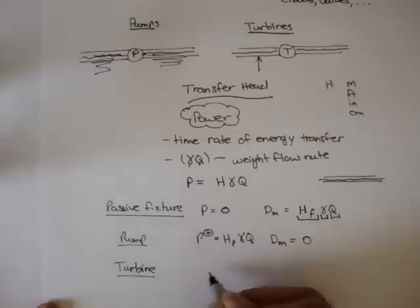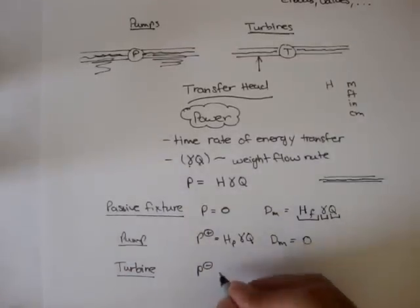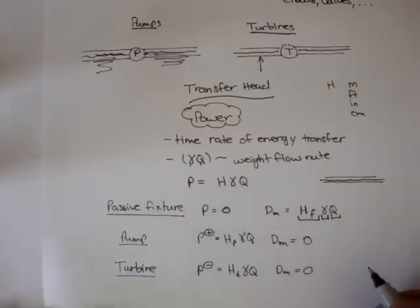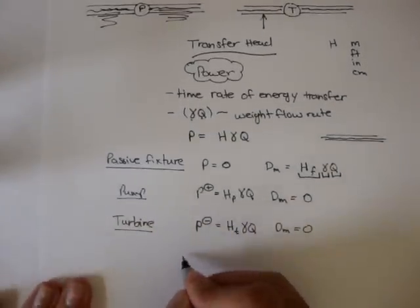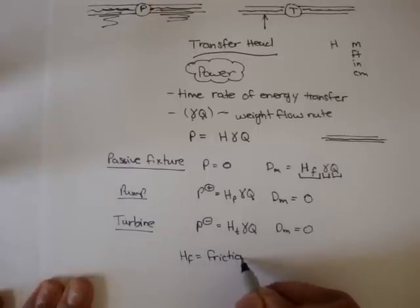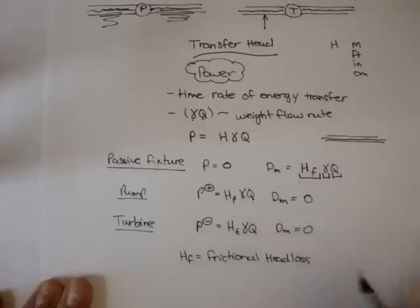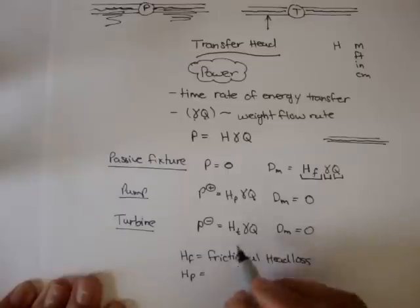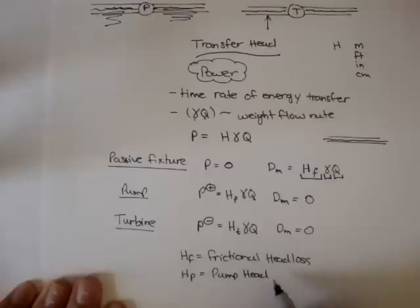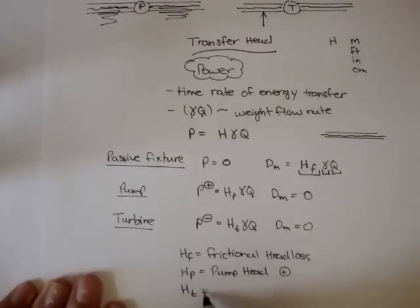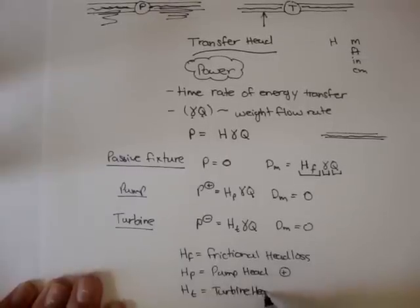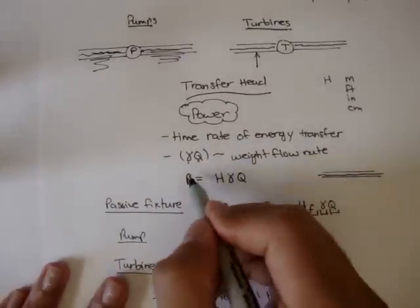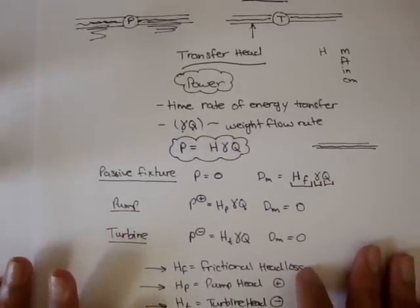For the turbine, it's actually negative because the turbine takes away energy. That's equal to HT — the turbine head — times gamma Q, and again, dissipation is zero. In short: HF is the frictional head loss for simple passive devices and passive fixtures; HP is the pump head, which is usually positive because it gives energy to the water; and the turbine head is usually negative because it extracts energy out of the water. We'll use these along with our power formula to figure out an equation in the next video.